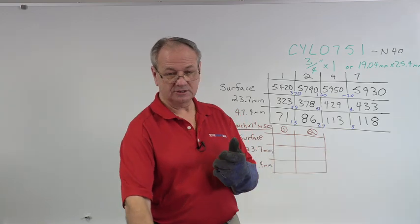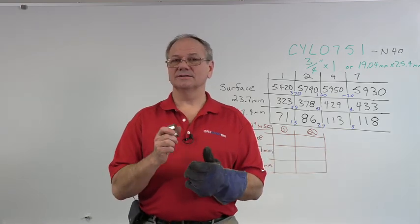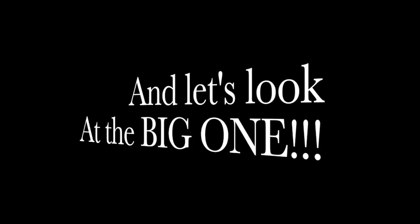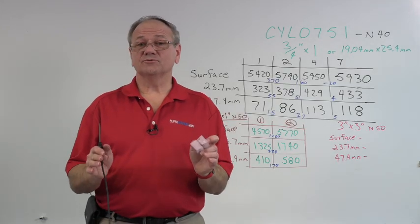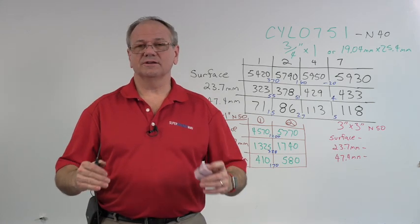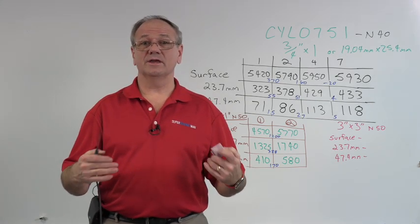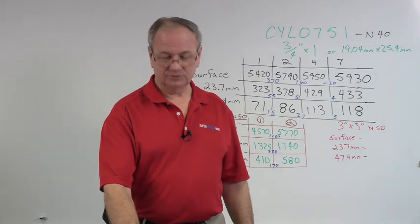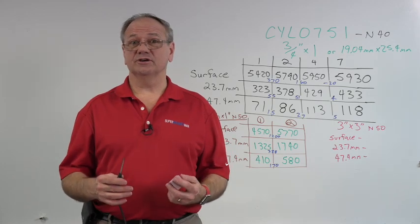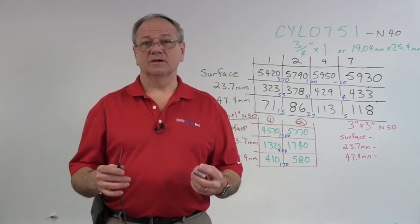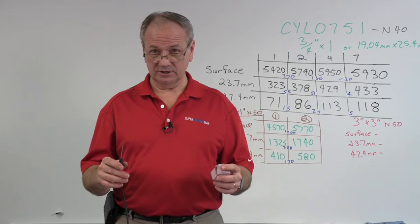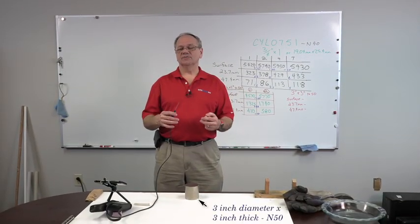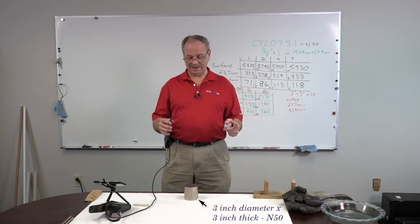I still want to take this up to the biggest magnet that we have that we can look at, and it's a cylinder as well. It is three inches in diameter, three inches thick, N50. And what we're going to do is take the readings on it. I won't be able to stack a second one on it, but this will give you an idea of how the field changes based on size.